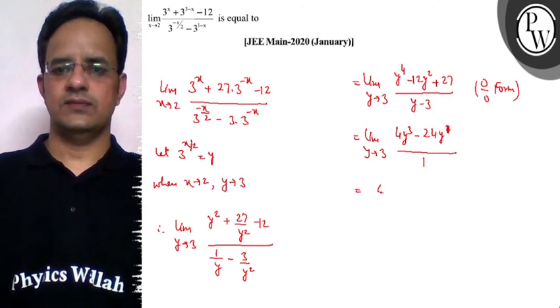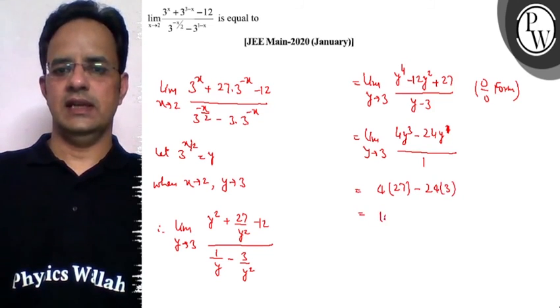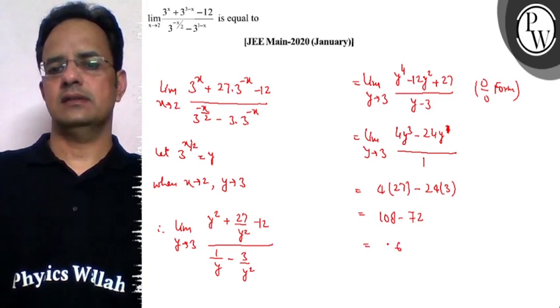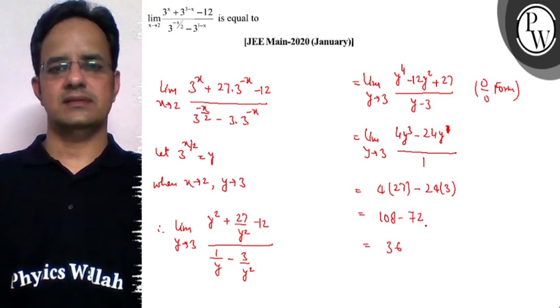Now substitute the limit, then it is 4 multiplied with 3 cube means 27 minus 24 multiplied with 3, so it is 108 minus 72, so we get 36. So the final answer to this problem is 36. Hope you understood it well, best of luck.